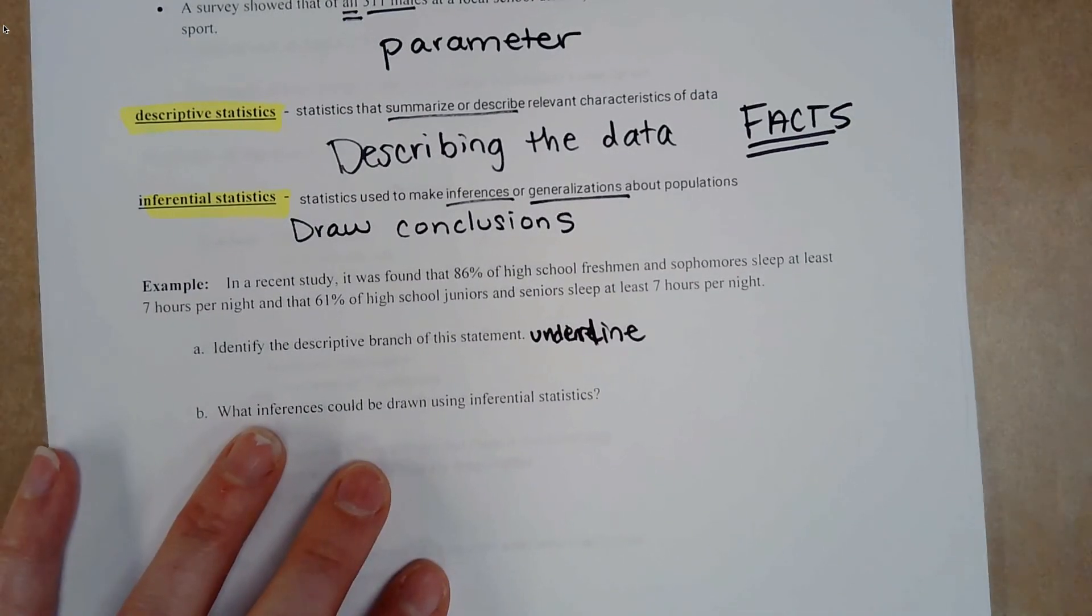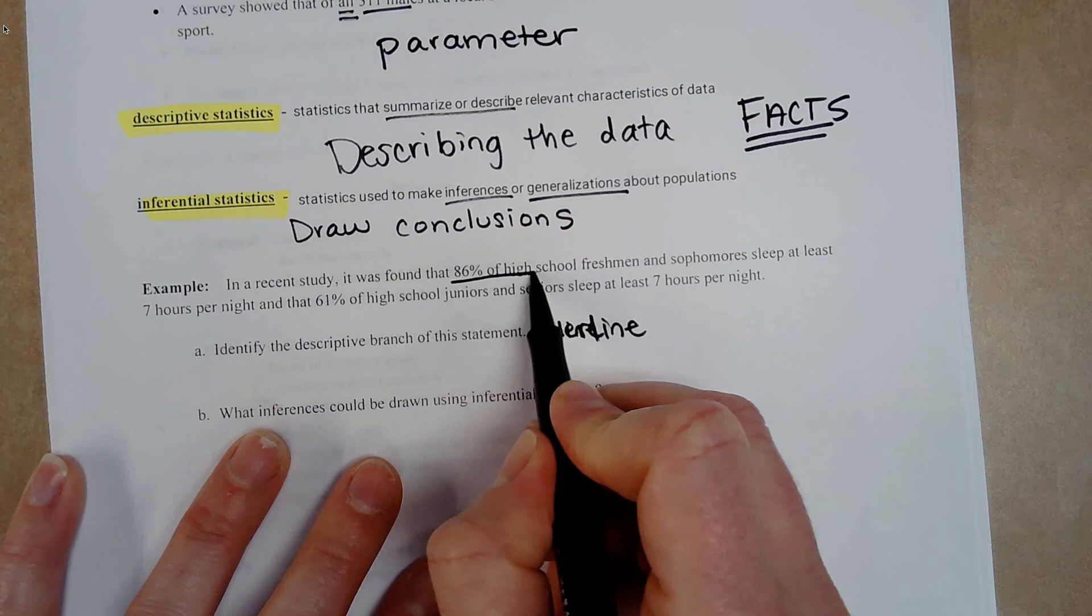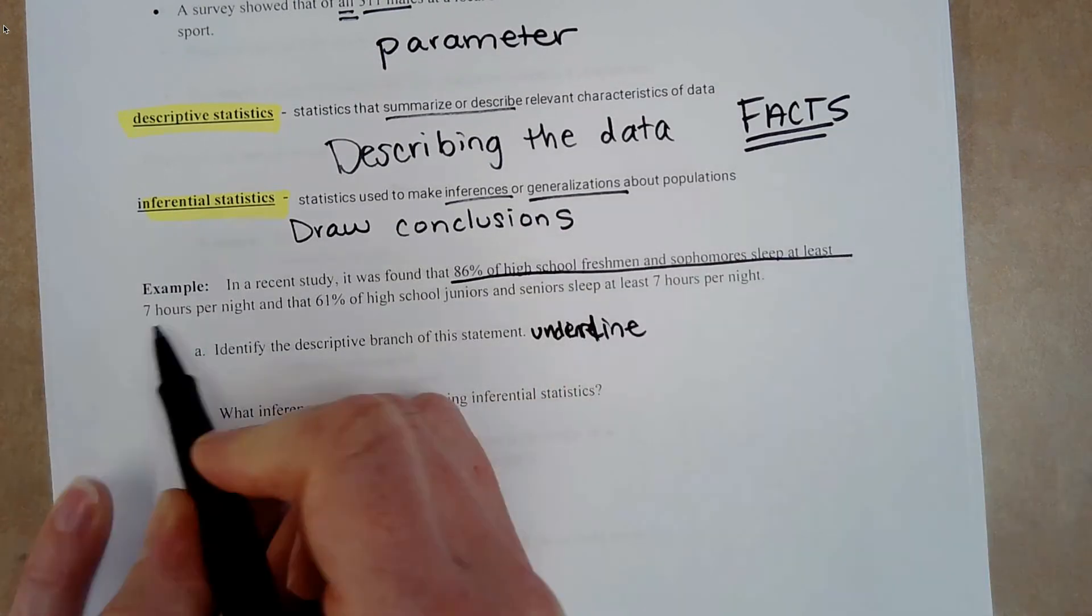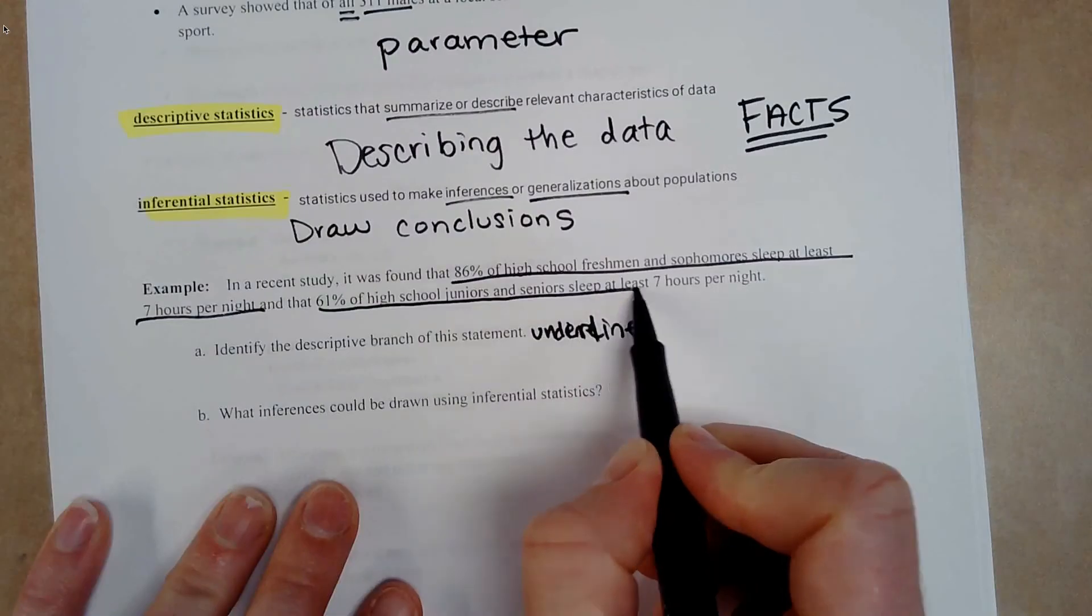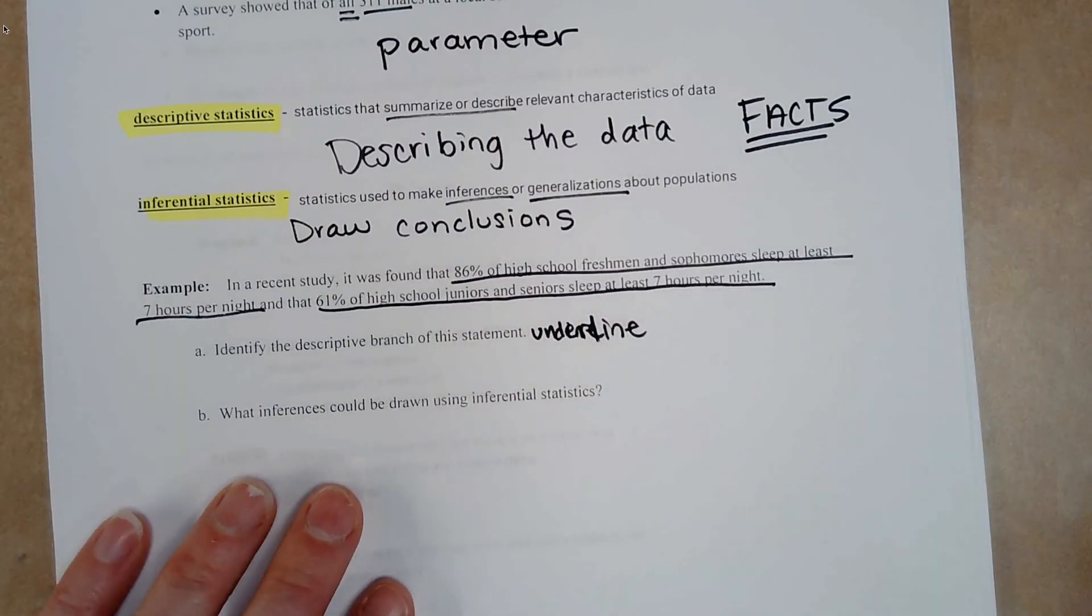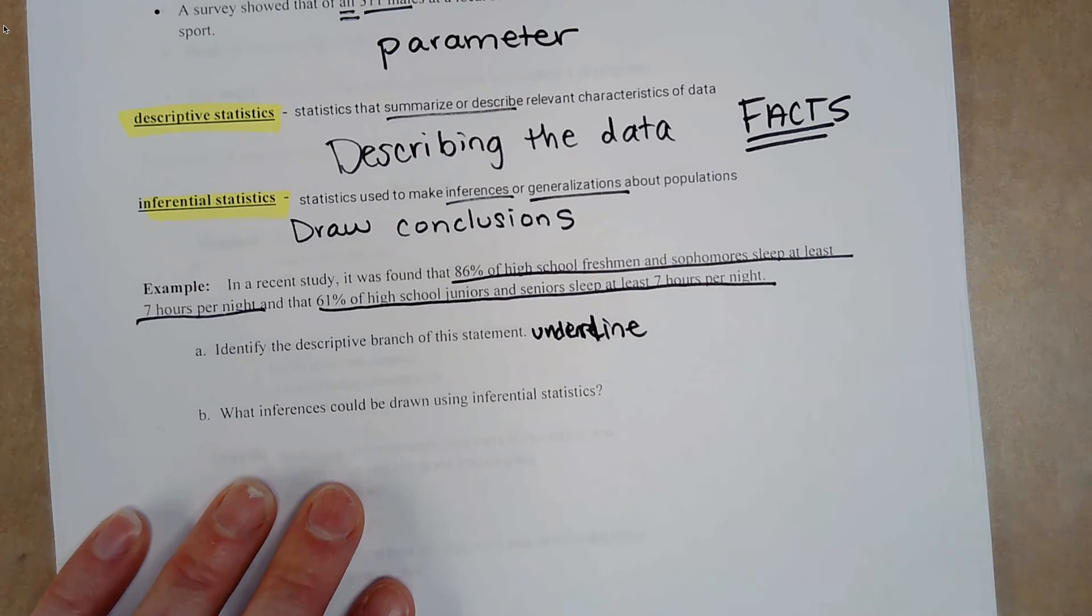So it's the facts about the data. The fact is, they found that 86% of high school freshmen, sophomores sleep at least seven hours per night. And 61% of high school juniors and seniors sleep at least seven hours per night. Those are the facts that came from the data.